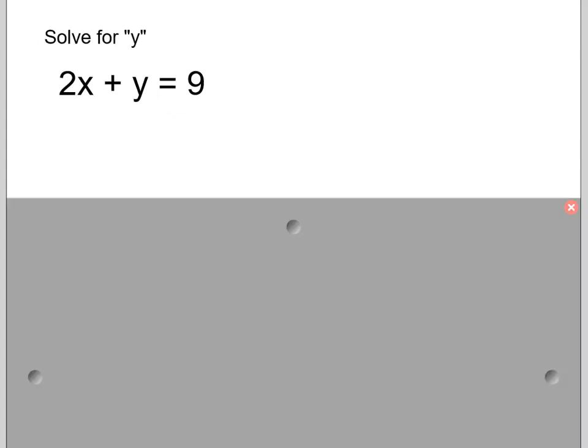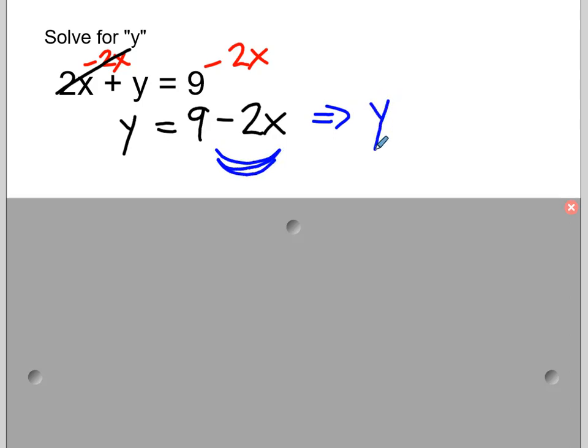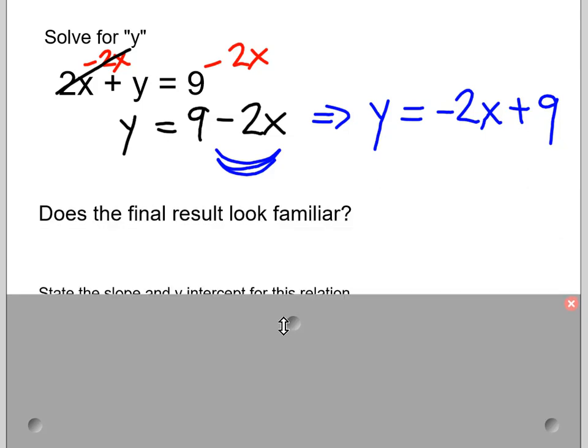Okay, solve for y. So 2x plus y equals 9. So I want the y all by itself. I've got a couple ways I could approach this. But I want to go after getting rid of this 2x on the left-hand side. So I'm going to subtract 2x from both sides. Okay, now this side of these would cancel. And I'm left with y equals 9 minus 2x. But I'm going to do a little bit of a rearranging here. Okay, and I want to point out that the sign that's in front of the term stays with it. So I'm going to rewrite this as y equals negative 2x plus 9.